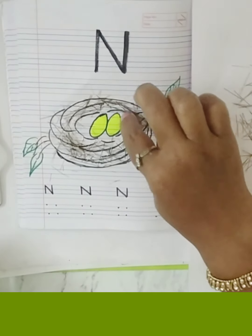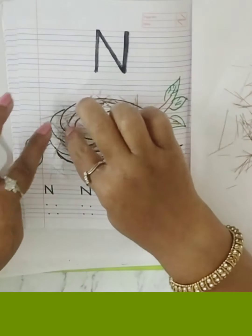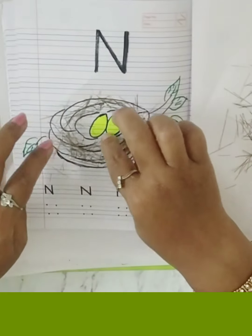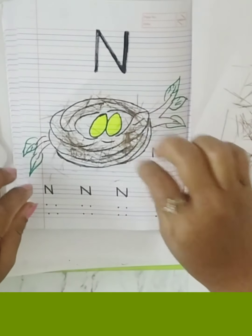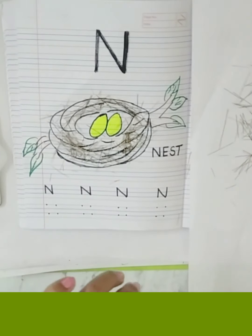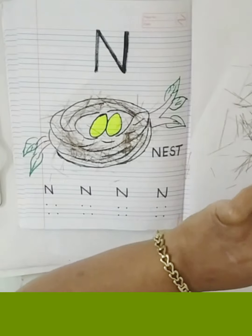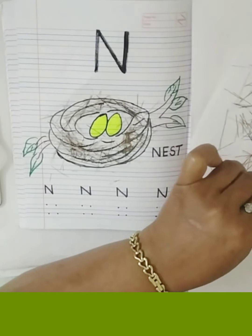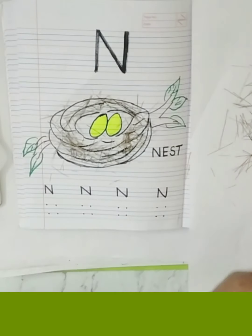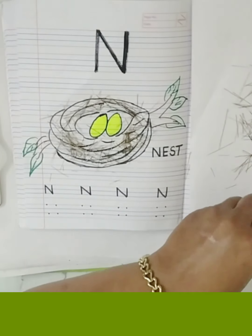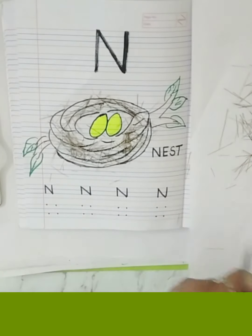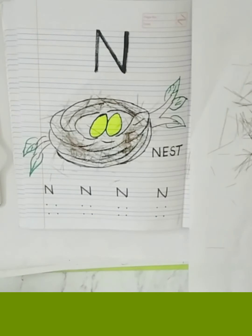Grass is also made by things like this, bird also makes a nest, and this is how you see it. So what do we do now? We are making the nest.